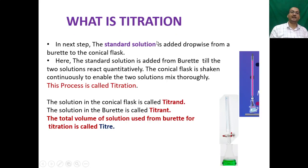In the next step, the standard solution is added dropwise from a burette to the conical flask. Here you can see the picture of burette. The standard solution is added from burette till the two solutions react quantitatively. The conical flask is shaken continuously to enable the two solutions to mix thoroughly. This process is called titration.